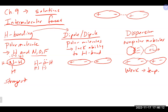Intermolecular forces also greatly affect the solubility of one substance in another. If two substances use the same type of intermolecular force, they will be soluble in each other. If you try to mix water — which uses hydrogen bonding — with oil — which uses dispersion forces — they have no way to interact well and are insoluble. This is why in an oil spill, the oil just floats on top of the water.